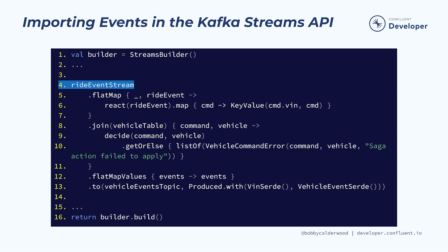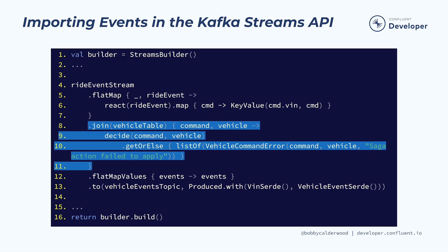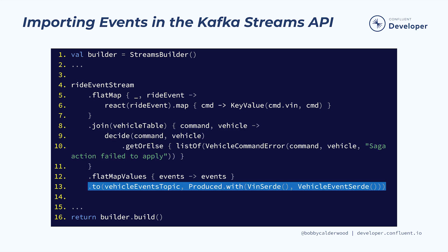Next, we can use the same Kafka Streams topology to wire up our saga reactions in order to translate certain ride events to the vehicle's event stream. Starting with the ride event stream, we pass each event to our React function, and then flat map the resulting list of commands. For example, when we observe the RiderDroppedOff event, React would return a single element list containing the MarkVehicleUnoccupied command. Then we join that stream of commands with our vehicle's KTable in order to fetch the current state of the affected vehicle for use in our Decide function. Just as with the user-initiated command decision, if the Decide function returns a successful result, we flat map those events onto our vehicle's event topic.